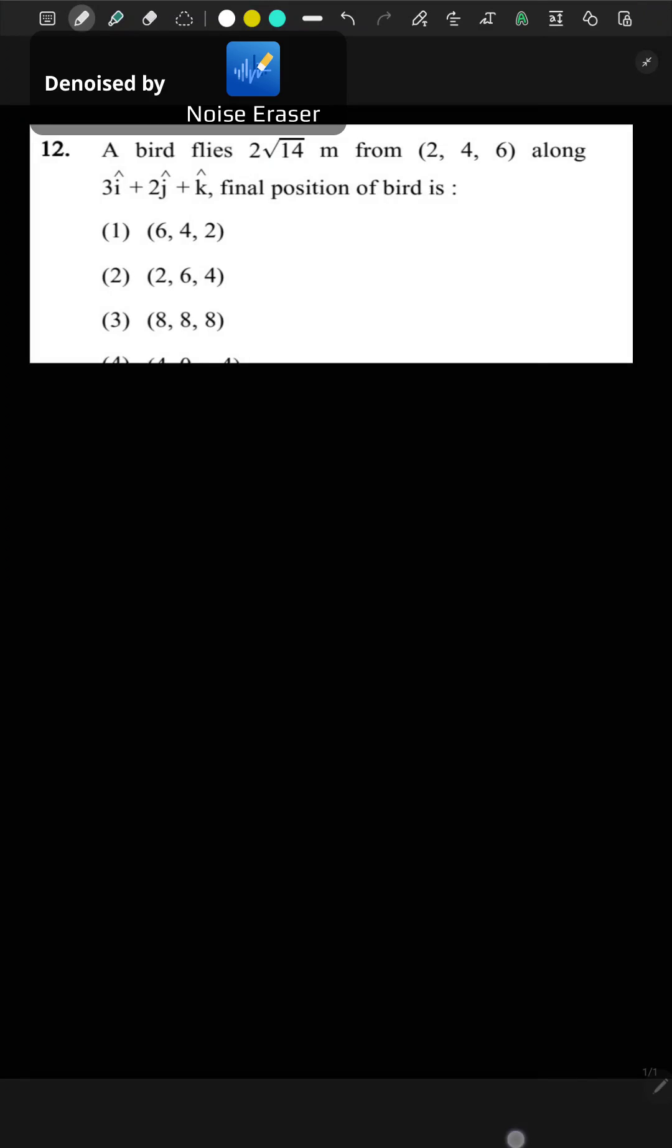In this question it is given that a bird flies 2 root 14 meters from (2, 4, 6) along 3i cap plus 2j cap plus k cap. So it is moving along this direction, and that simply means that this bird is flying parallel to this direction. When two vectors are parallel, then their unit vector is equal.